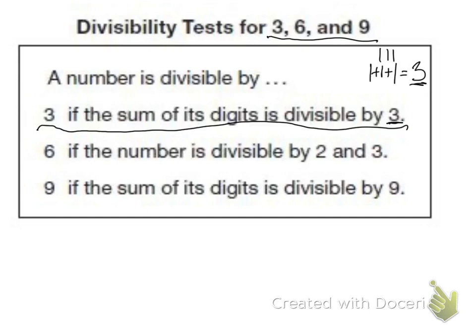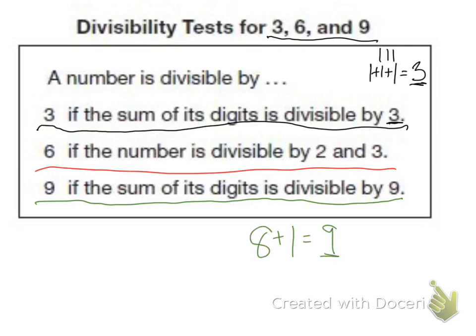For 6, it says if the number is divisible by 2 and 3, that means I have to be able to divide it by 2 and 3, which means it can also be divided by 6. And 9, if the sum of the digits is divisible by 9. Just like with the 3, I would take the numbers. Let's say I have 81. Well, 8 plus 1 equals 9, and I know 9 can be divided by 9, so 81 can be divided by 9.